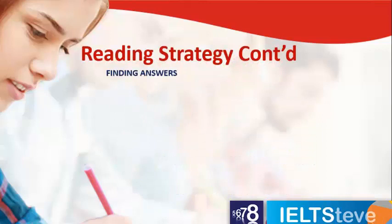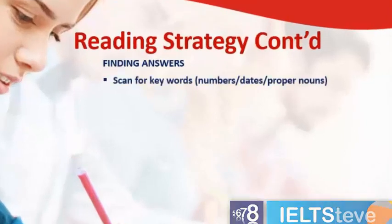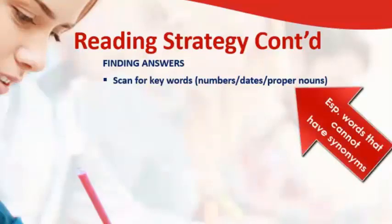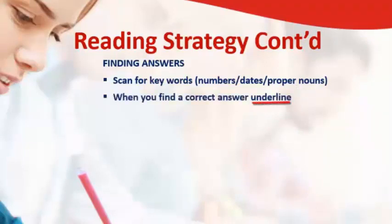Here are some tips for finding answers in that one minute. First, if you see key words in the questions like a number, a date, or a proper noun — someone's name, for example — they cannot use synonyms for those. So you can scan very quickly for where that number or date appears, and then you know where that answer is.